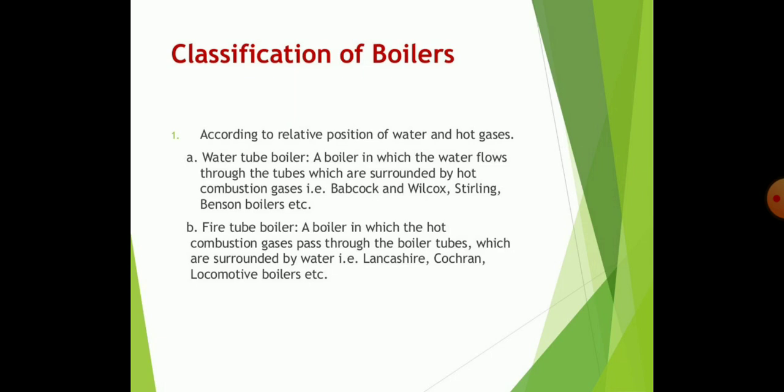For achieving this purpose, we can classify these boilers into water tube boilers and fire tube boilers. Water tube boilers are those in which water flows through tubes that are surrounded by hot combustion gases, such as the Babcock and Wilcox boiler. Fire tube boilers are those in which hot combustion gases pass through boiler tubes that are surrounded by water, such as the Lancashire boiler and Cochran boiler.